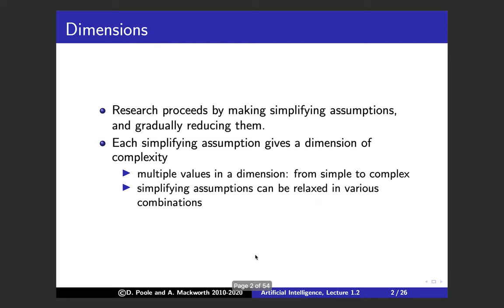Intelligence is a matter of degree, so we're going to define this in dimensions. Like in physics, research proceeds by making simplifying assumptions and gradually reducing them — start with the simplest case and build up more complex ones. Each simplifying assumption gives us a dimension of complexity, from simple to complex, and relaxing assumptions in various combinations gives us a whole space of possible designs.